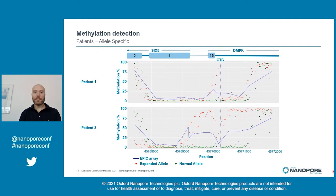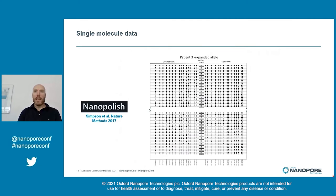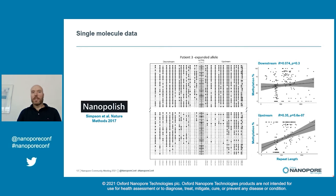Looking even closer at the data, we can analyze on a single read level from the nanopore data, and for instance see the number of methylated CpG sites on a specific DNA molecule. Here, the area close to the CTG repeat is shown for patient three, and the black dots indicate a methylated site. With the disclaimer that these nanopore data are probability scores and should not be over-interpreted individually, we can get an indication that there is a correlation between repeat size and the number of methylated positions close to the CTG repeat, but we need more data to confirm this finding.